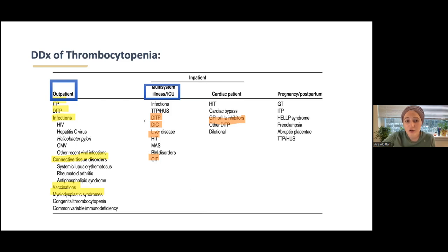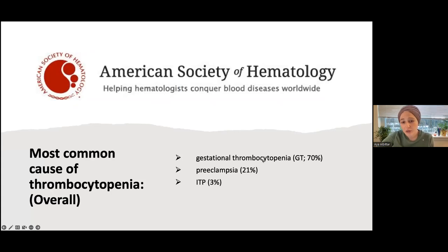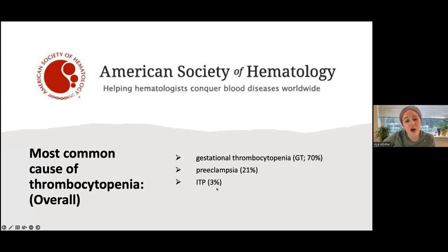For our patient population, the most common cause of thrombocytopenia overall is actually gestational thrombocytopenia — it's 70% — and preeclampsia. A majority of thrombocytopenia is seen in pregnant women. ITP is only 3%. Drug-induced is pretty common.